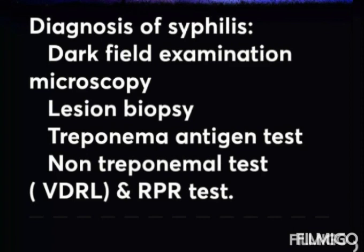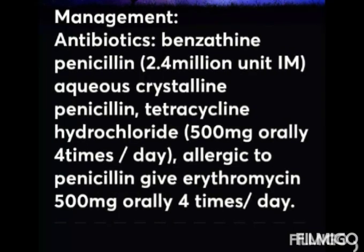Lesion biopsy involves pathological examination of a suspected lesion stained by silver impregnation technique, particularly useful when organisms are few in number, as in tertiary lesions. For oral lesions, this technique is of considerable value. The treponemal antigen test is used to make a confirmative diagnosis of syphilis. Non-treponemal antigen tests — VDRL (Venereal Disease Research Laboratory) and RPR (Rapid Plasma Reagin) — are used to assess the efficacy of therapy.